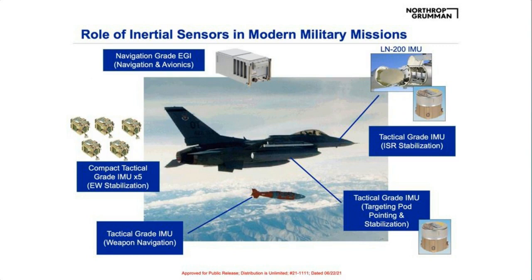When you look at a single platform, it can be surprising to see the number of places where inertial technology plays a role. In the F-16, nine different inertial systems support different aspects of the mission. The LN-260, the main aircraft EGI, navigates and aviates the platform to its target. An ESA radar in the nose cone is stabilized by an LN-200, and another LN-200 in the targeting pod stabilizes the camera and provides heading to acquire the target vector. Some F-16s also have electronic warfare capability requiring antenna stabilization with a compact IMU.